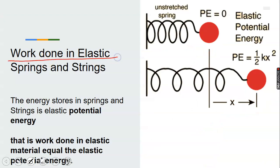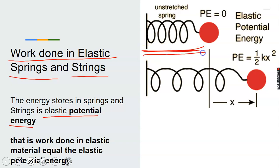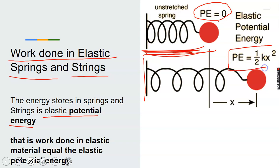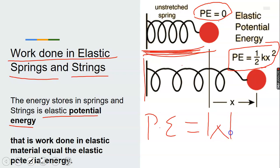Work done in elastic spring and string: the energy stored in a spring or string is elastic potential energy. Work done on an elastic material equals the elastic potential energy stored. Every spring has energy stored inside it. When it is at its original length, the elastic potential energy equals zero. When it has undergone some distortion, we use a formula to calculate that elastic potential energy.